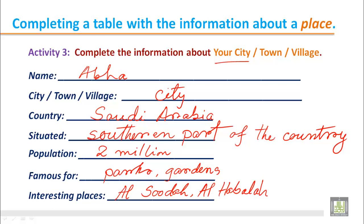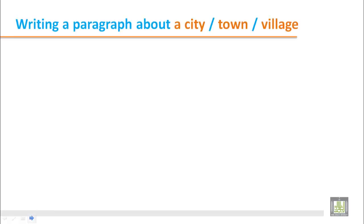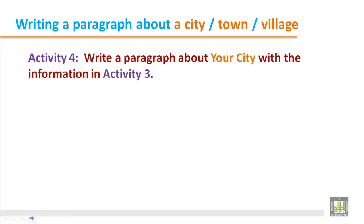So this is the information about your city. Now you are going to write a model paragraph about your city, town, or village — Activity 4: Write a paragraph about your city using the information from Activity 3. We just completed that information, and now we use it to write the paragraph.